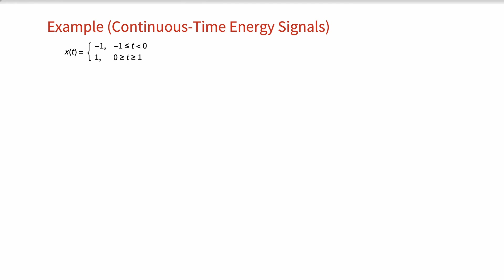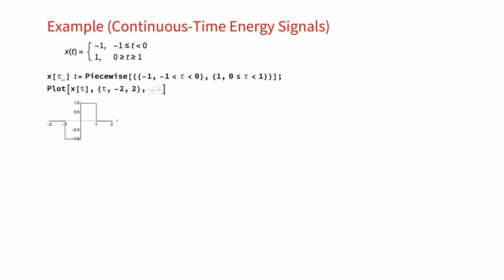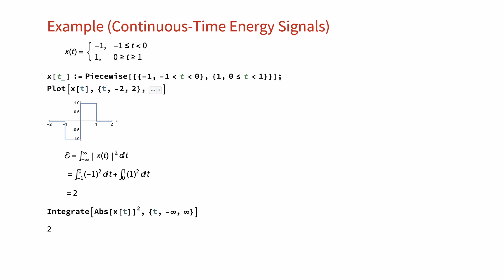Let's look at an example where we have x(t) as defined here, and we want to calculate its energy. Using the Wolfram Language, we can define the signal as piecewise and plot the signal. The piecewise continuous time signal has odd symmetry, as you can see. It is bounded and of finite duration, so we know that the energy will be finite. To calculate the energy using the definition, we replace x(t) with its value over the two intervals, and we get the two integrals shown here. Simplifying and evaluating the expression, we get 2 for the energy. Also, using the Wolfram Language, we can take the integral and get the same value.